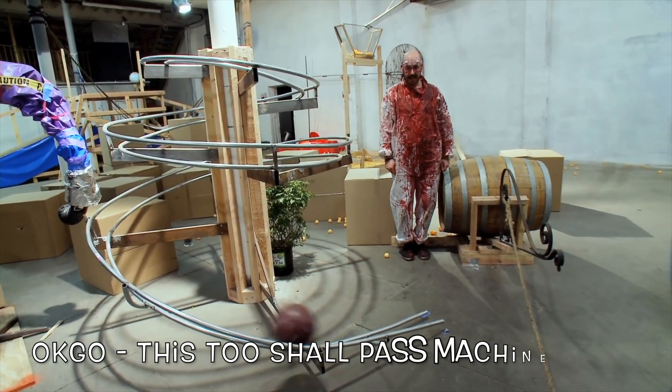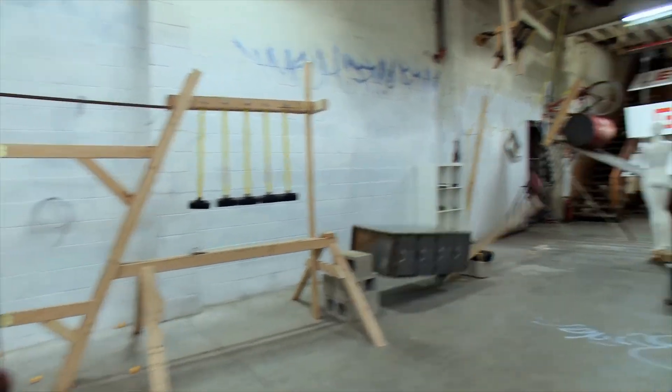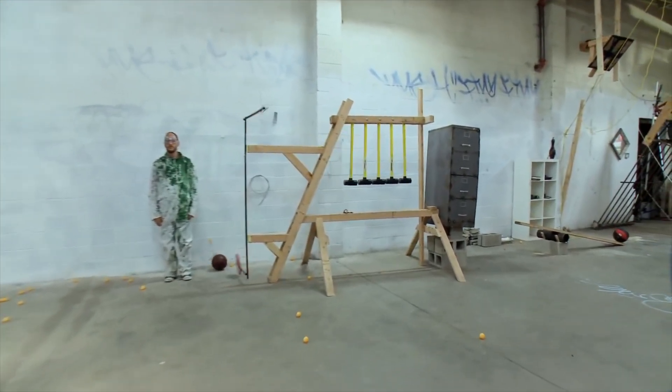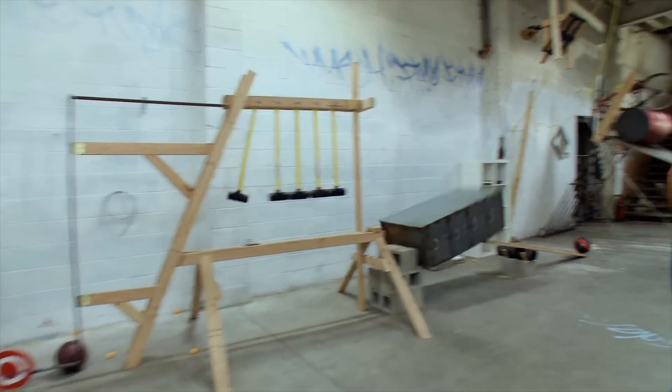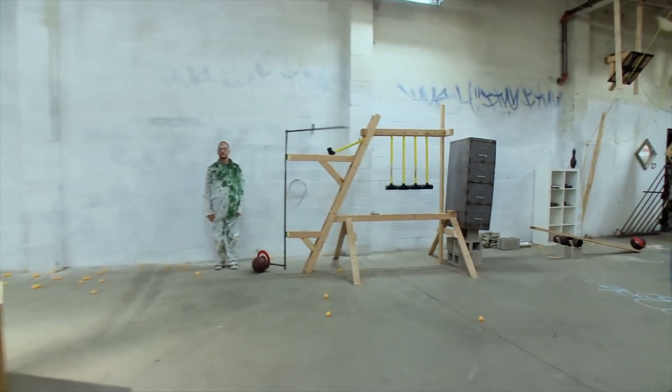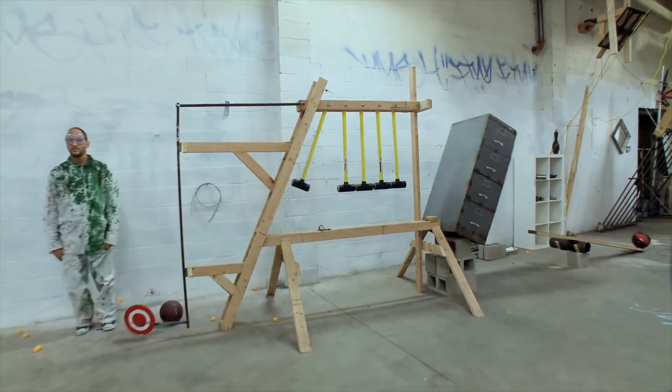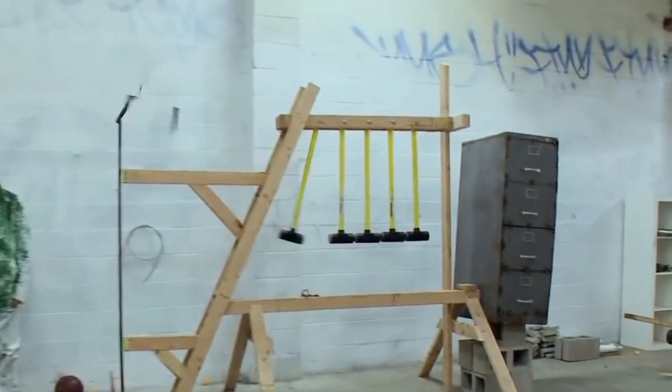Our final Newton's Cradle example comes from probably one of the most famous Rube Goldberg machines ever built and that's the OKGO machine. Built by the Syyn Labs team in 2010 this machine had so many amazing elements that I personally feel that the Newton's Cradle seen here often gets overlooked. I think it's the best example we've seen of everyday objects being substituted in to create that classic Newton's Cradle effect.